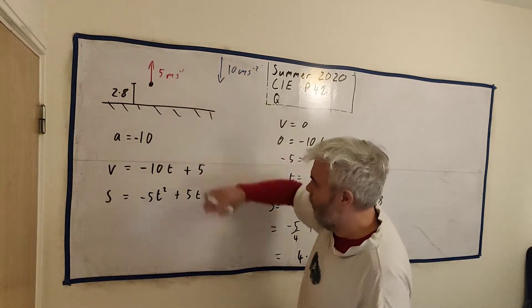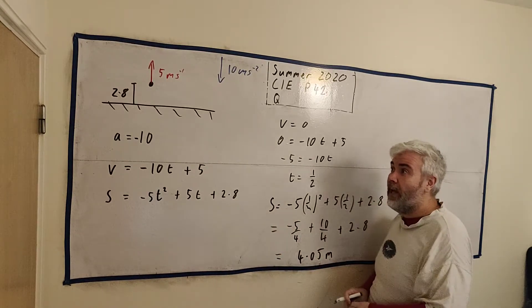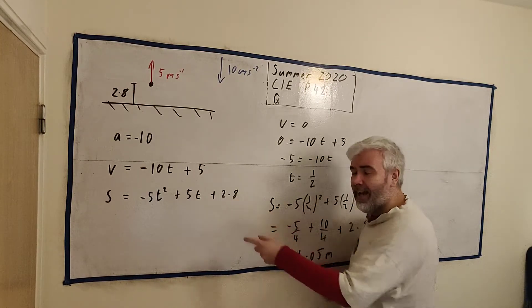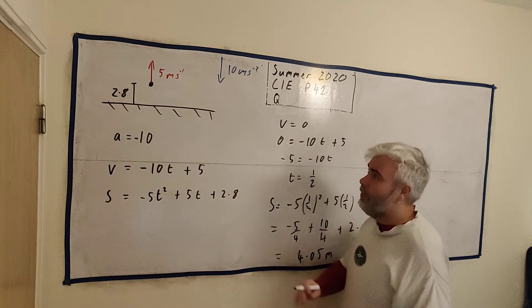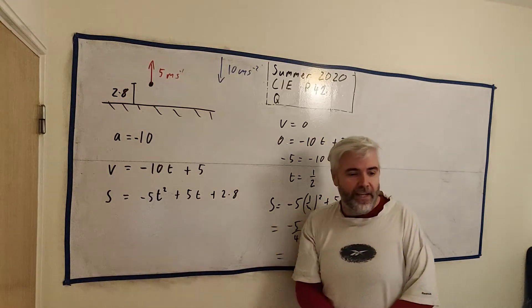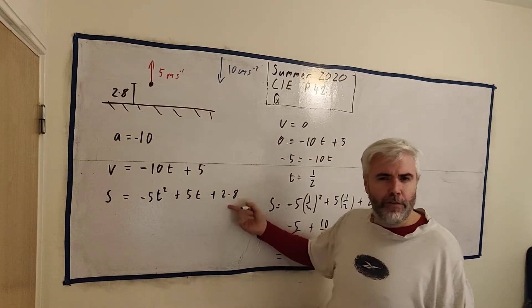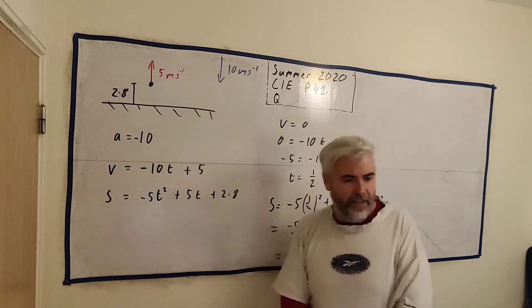You could get different answers to this. If you had put 0 here, which is perfectly okay, you would just have to remember to add 2.8 at the end because you're getting the displacement starting at this point. If you used your normal formulas, you'd probably miss out on this 2.8 and you'd have to add it in at the end.